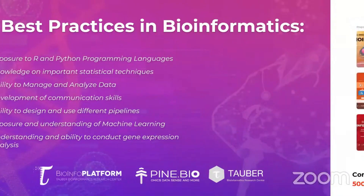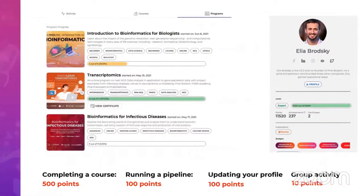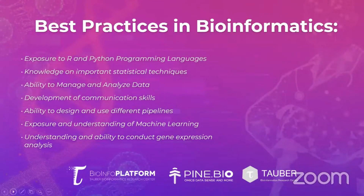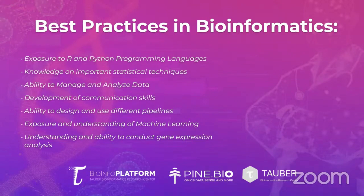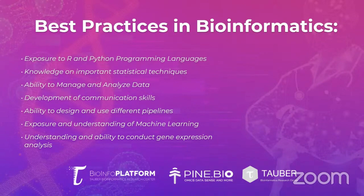Participation in group activities will give you 10 points. After achieving the learning outcomes, you will have learned some of the major best practices in the field of bioinformatics. You will be exposed to R and Python, the two most powerful programming languages. Bioinformaticians will need to understand how to use t-tests, regression, and other statistical tests. Analyzing and managing data to communicate important information is another best practice, as is pipeline development and visualization. Ultimately, completing the precision medicine program will help you enter the field of bioinformatics.